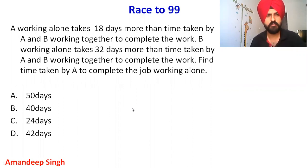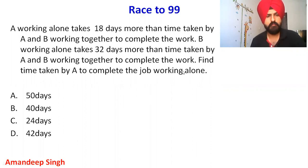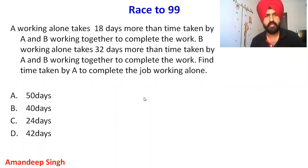The question says: A working alone takes 18 days more than the time taken by A and B working together. B working alone takes 32 days more than the time taken by A and B working together to complete the work. Find the time taken by A to complete the job working alone.